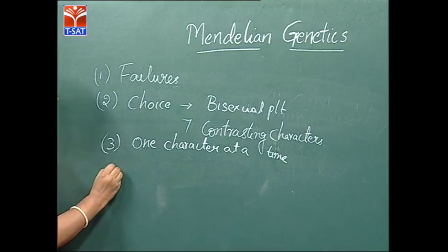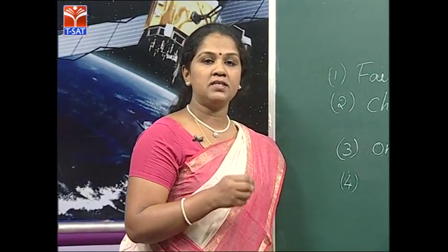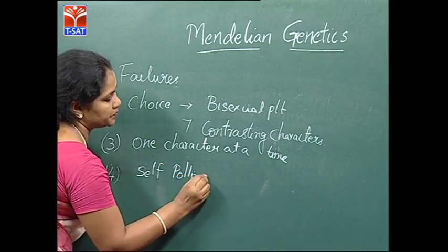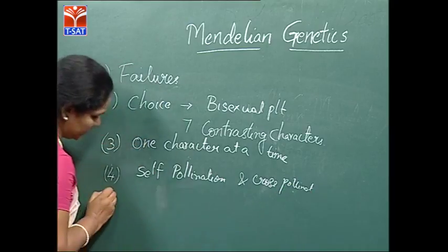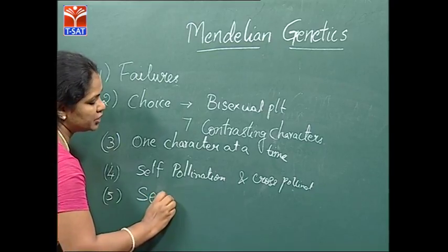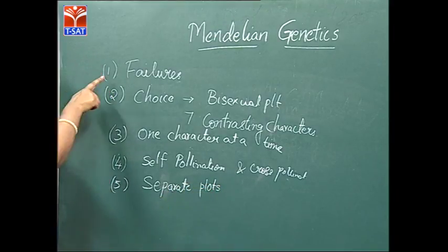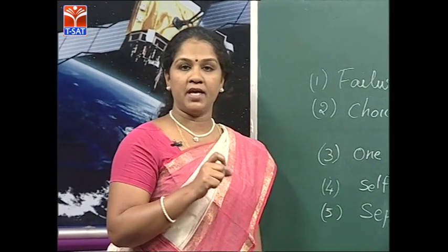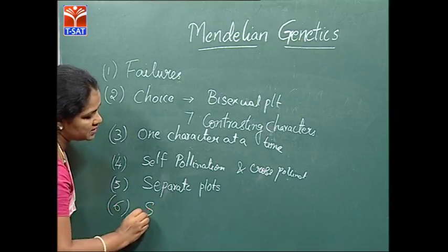He had profound knowledge about mathematics, statistics, as well as breeding experiments — that is biology. This helped him in planning self-pollination; he knew techniques like self-pollination as well as cross-pollination. He maintained separate plots for each character as well as for homozygous and heterozygous plants. Mendel succeeded because of systematic planning and statistical recording of his results.